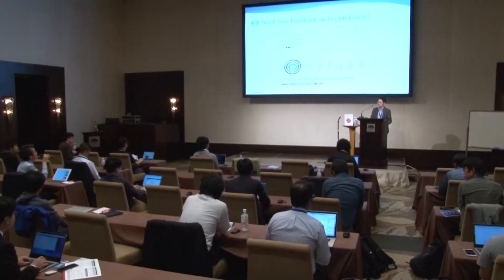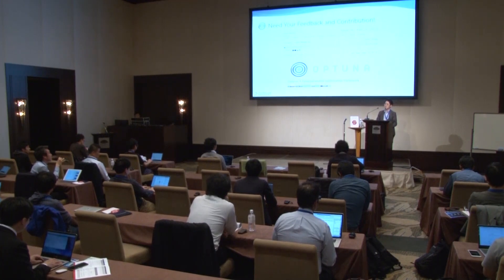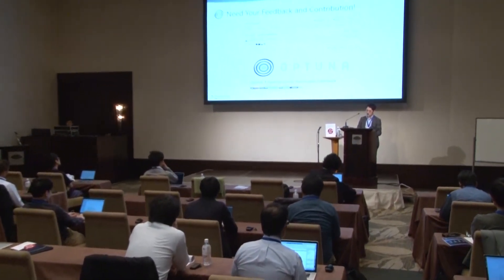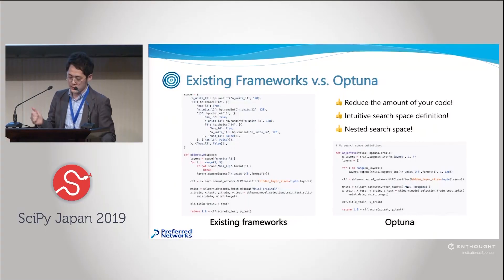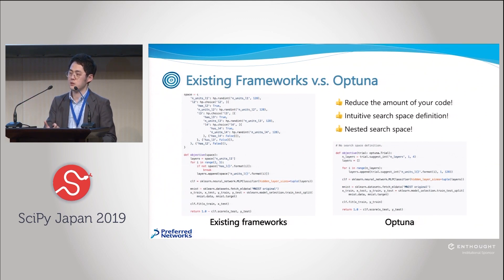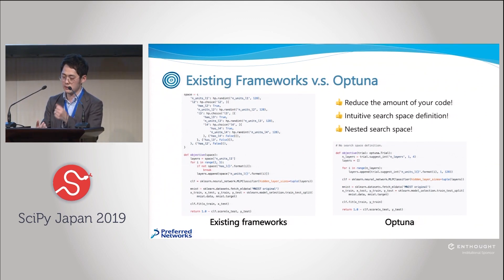A question in Japanese: regarding writing optimization parameters embedded in Python syntax — when using the optimized results, can you do so without modifying the code used for optimization, or do you need to rewrite it? The answer is yes, you can. There is a class called FixedTrial not covered in the slides. You pass it to the objective function, and FixedTrial accepts a dictionary specifying the parameter values, allowing you to run with exactly those parameters without rewriting the code.